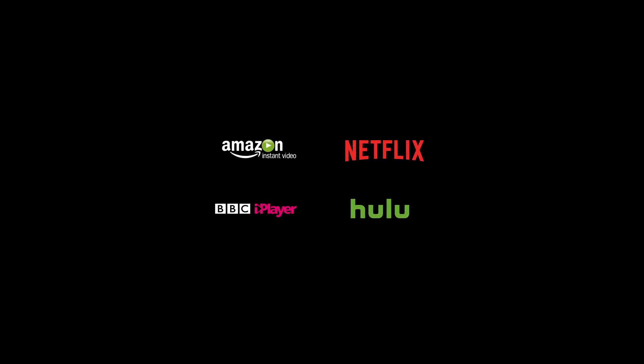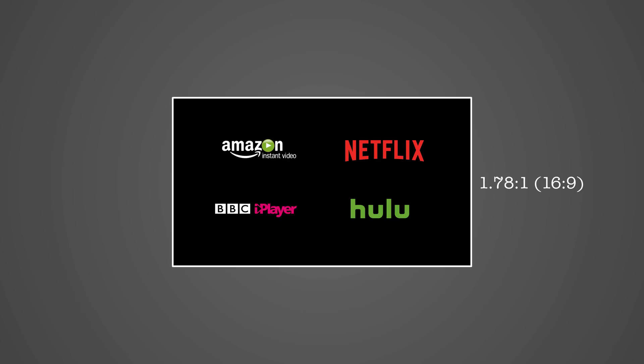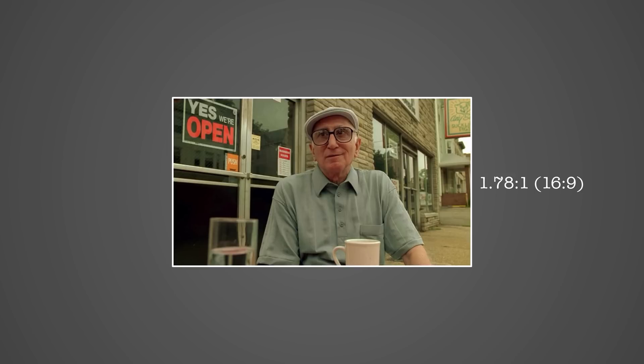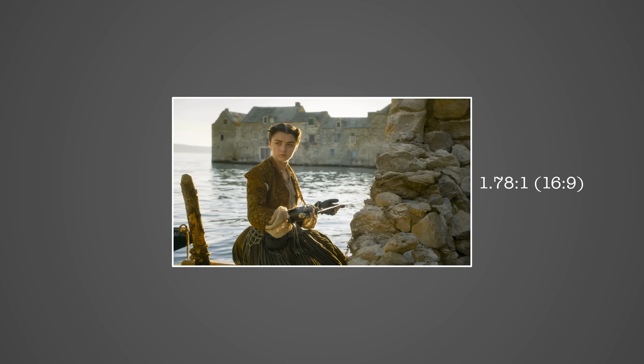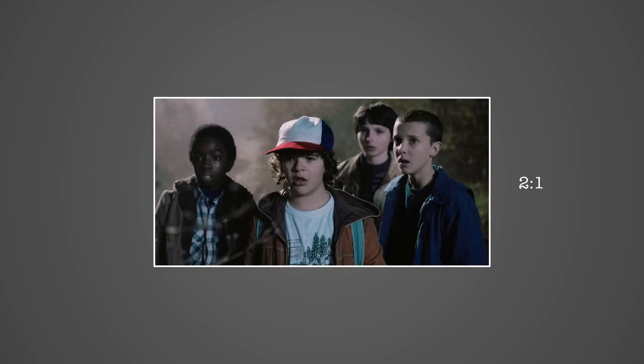Then you have TV and streaming content. The main contender here is 16x9, or 1.78 to 1 — that covers your Sopranos, Breaking Bad, Game of Thrones, all that kind of thing. But there are a few curveballs, like Stranger Things, which was at 2 to 1. For the sake of simplification, let's focus on a couple of dominant aspect ratios: 1.78 to 1, better known as 16x9, and 2.35 to 1.